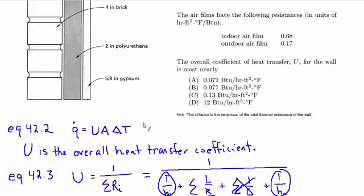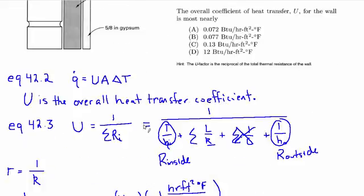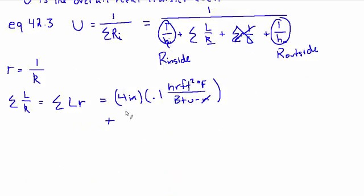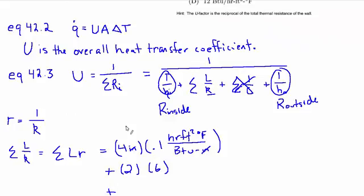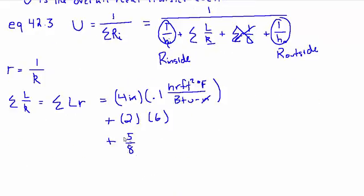Then we have the polyurethane, which is 2 inches times resistivity of 6. I'll skip the units because they're exactly the same and trust that that will work out in the end. And lastly, we have the gypsum board, which is only 5 eighths of an inch thick and has resistivity of 0.9.